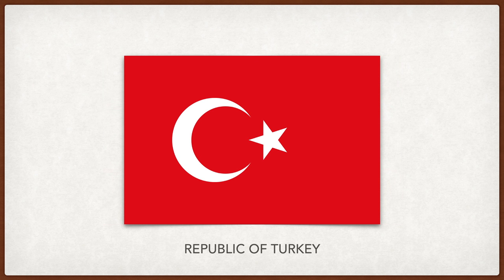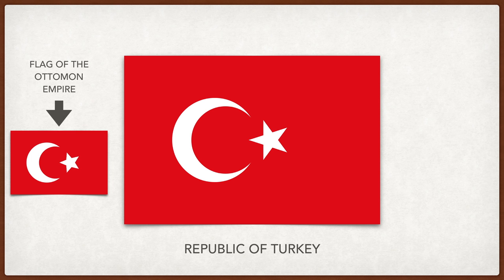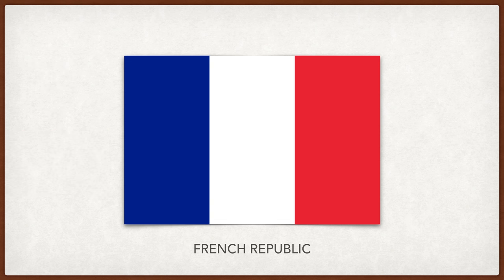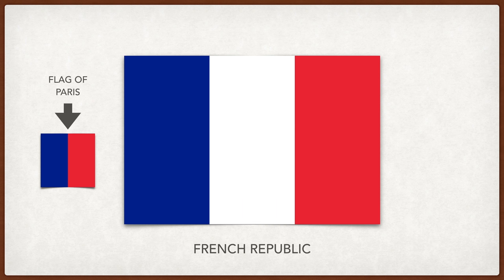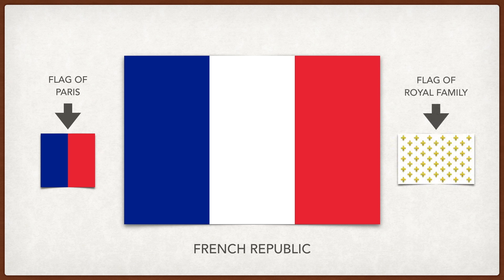Turkey. The moon and star is an ancient symbol for the Turks, used in the Ottoman Empire. Legend has it that it represents the moon and star reflected on the blood of Turkish soldiers. France. The tricolor flag came from the revolution. Blue and red were traditional colors of Paris. White was later added to nationalize the colors, making it the colors of France and not just Paris. While some saw white as the traditional color of France, others saw it as the color of the monarchy.